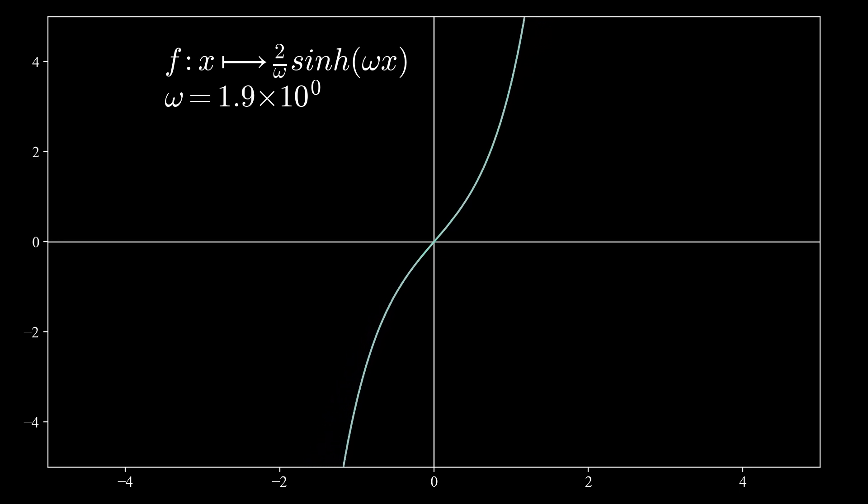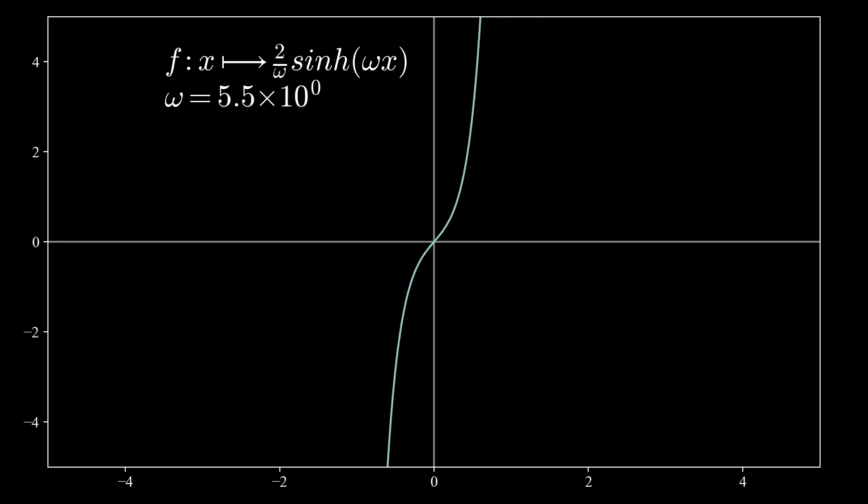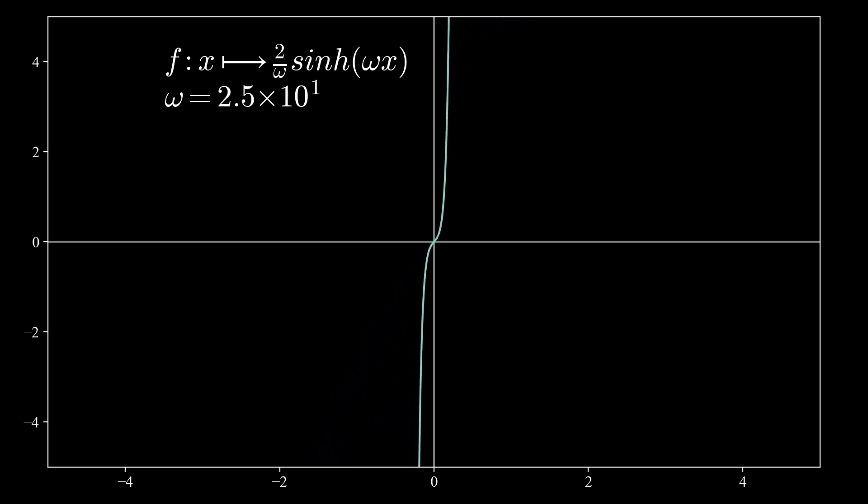If we keep increasing the value of omega for this set of functions, we can see that the curve gets closer and closer to the vertical axis until it almost merges completely with it. This is where we are reaching the limit of all possible solutions for this equation.